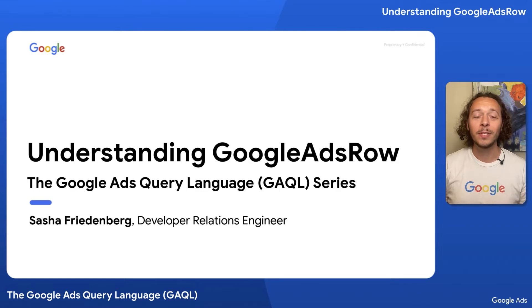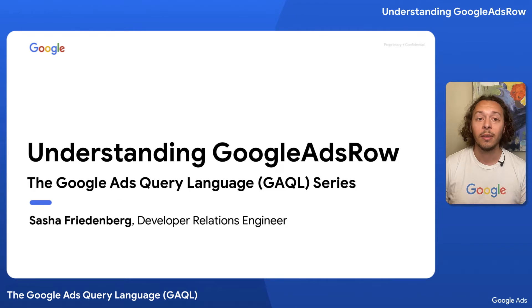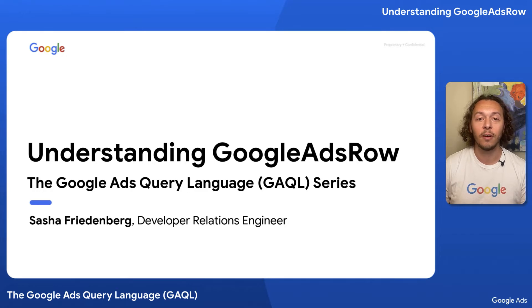Hey folks, my name is Sasha. In this session, we'll walk through the Google Ads row struct. This is the struct that is returned from all search stream and search requests. Each row represents a specific subgraph of the entire resource tree.